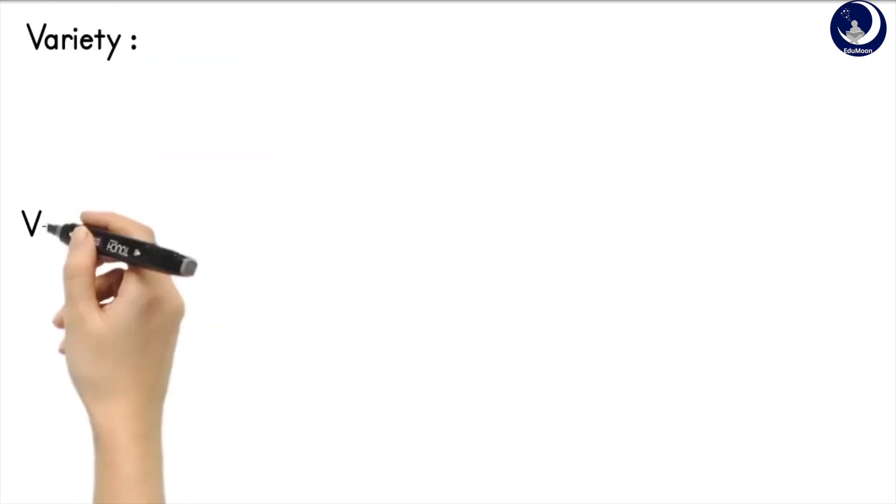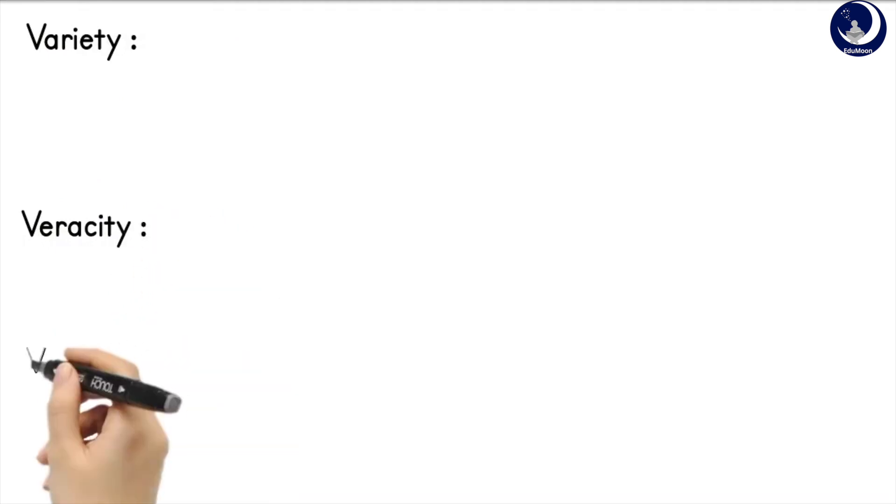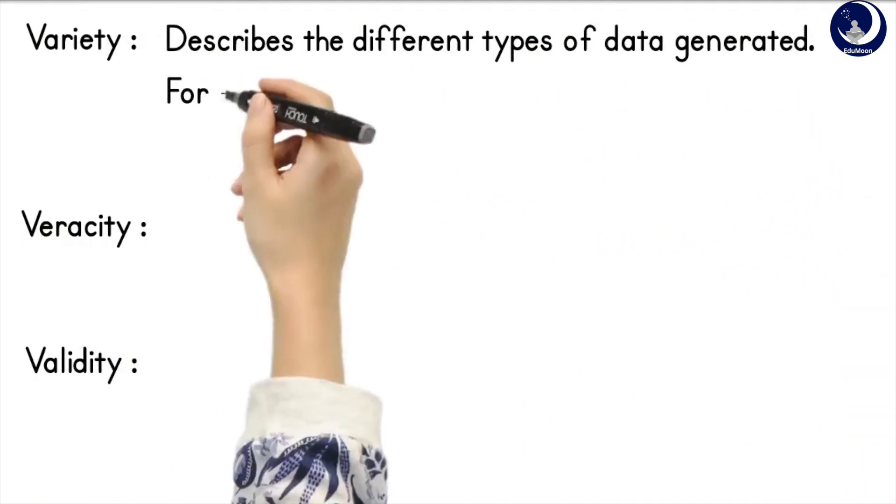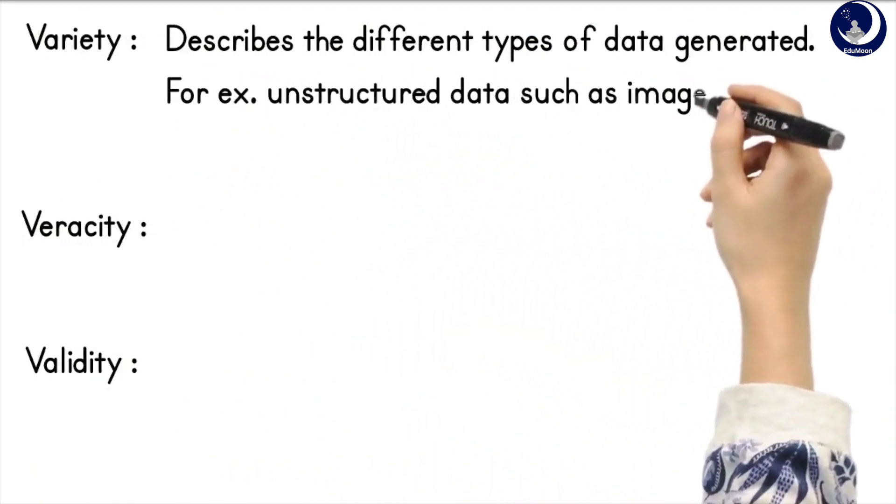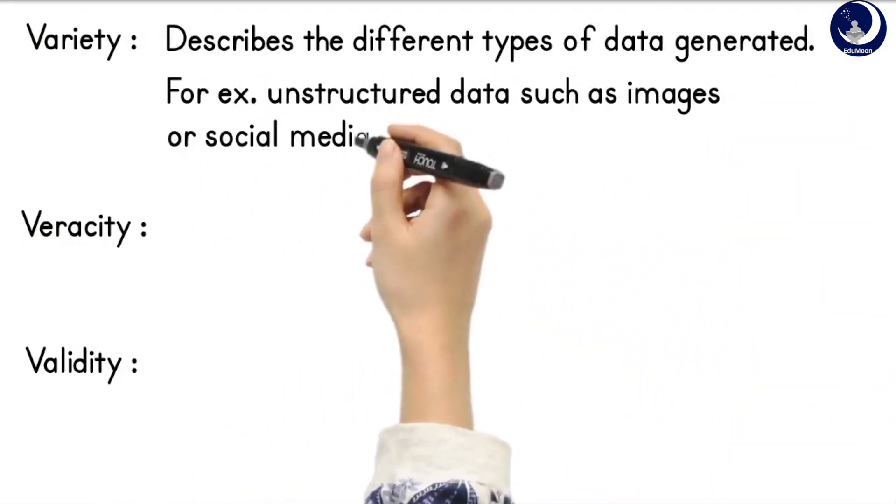Variety describes the different types of data generated. This term is largely used in reference to unstructured data such as images or social media posts.